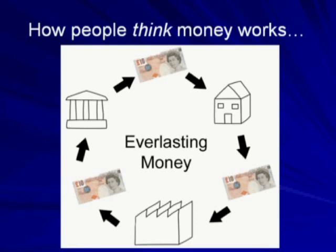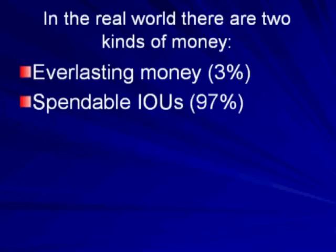We could label this everlasting money. In the real world, everlasting money does indeed exist, but it now only constitutes a tiny fraction of the money that circulates in the economy. The vast majority of money we spend is a second type, which can best be described as spendable IOUs.